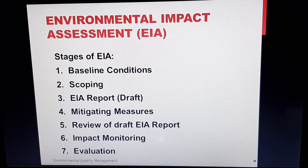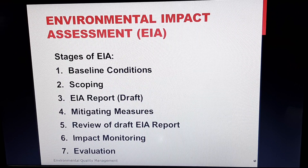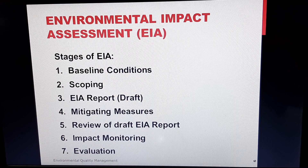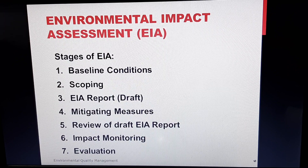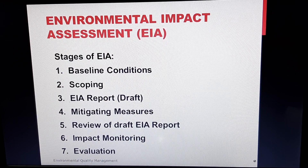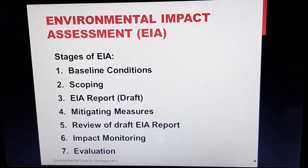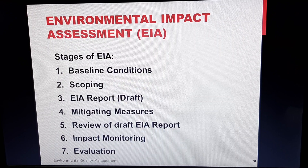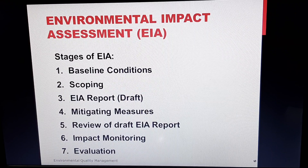There are stages of EIA, and these stages are very important while we assess the impact of production processes on the environment. The first stage is baseline conditions, which involves the study of the existing total environmental conditions in the area where the proposed project is to be undertaken. The general practice would be to take the area which falls within a 10-kilometer radius of the project.